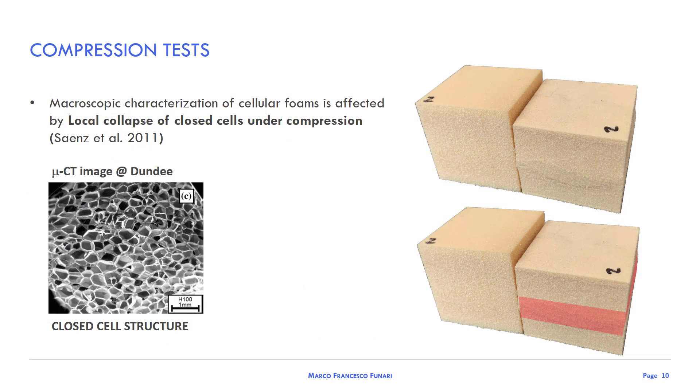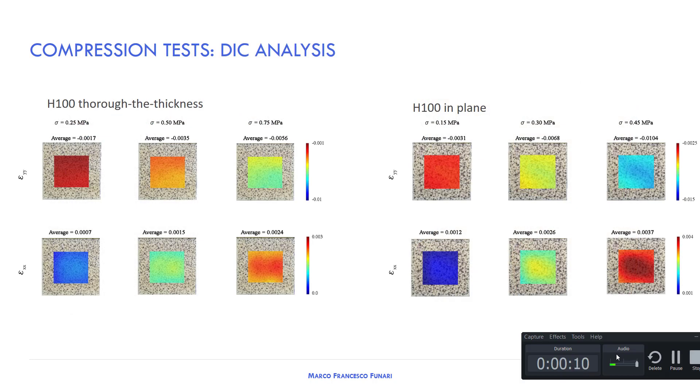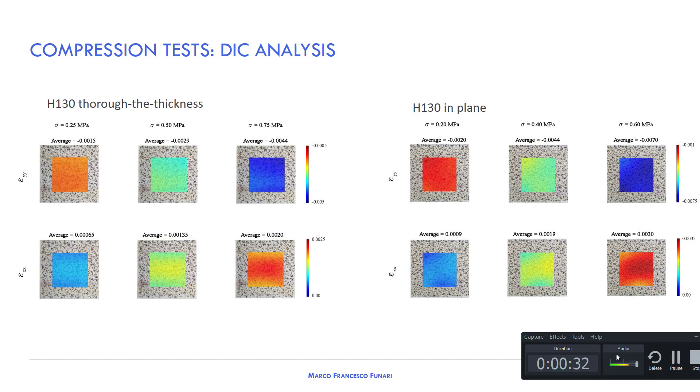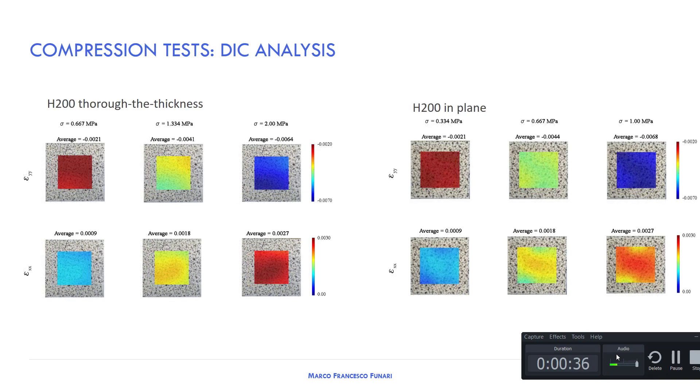In this picture I am reporting a sample before and after the test. As you can see, the collapse of the cells is concentrated in the medium region of the sample. For these reasons we use digital image correlation for the elastic characterization. In this slide I am reporting the strain maps recorded at different load levels and for both directions, in plane as well as through the thickness. This methodology was adopted for Diab H100, Diab H113, and Diab H200.